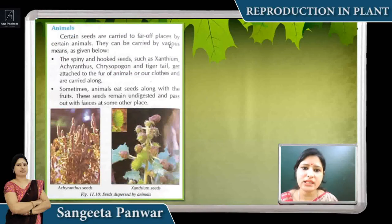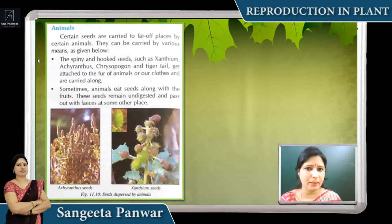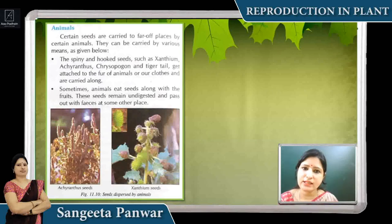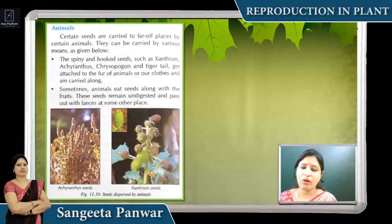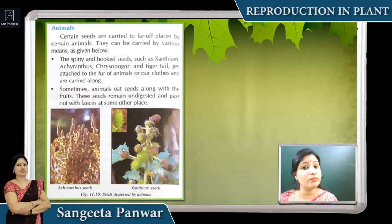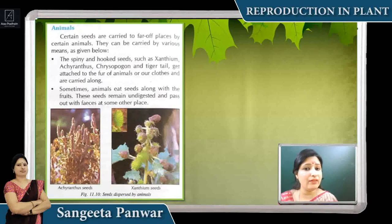Animals also help in seed dispersal. Many seeds attach to the fur of animals when they pass by plants. As animals move from one place to another, those seeds fall off along the way, and new plants grow there. When animals eat fruits, the seeds are thrown out afterwards, and whenever they find a proper condition, they grow into new plants.